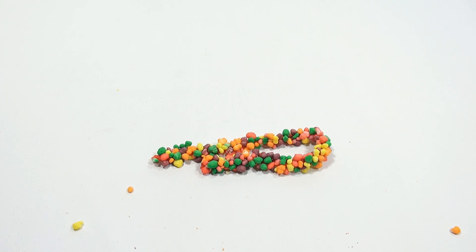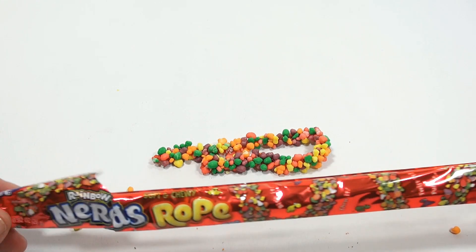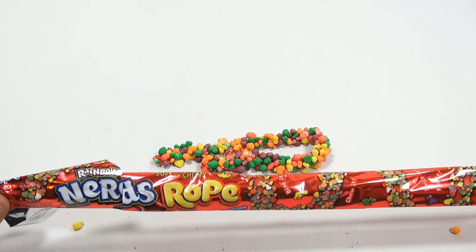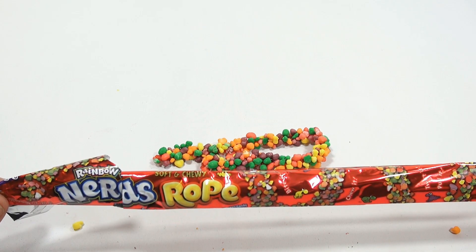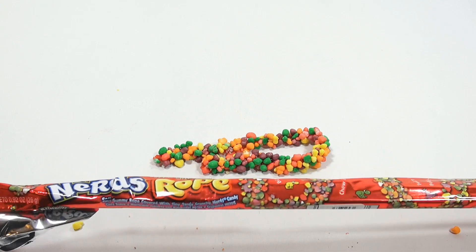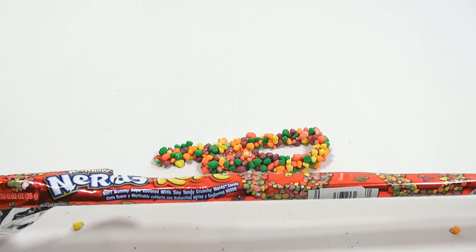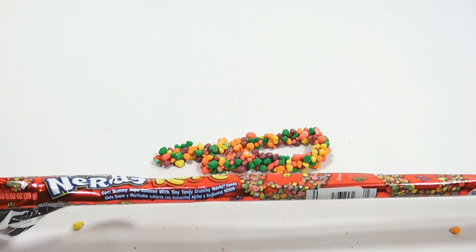So that is the Rainbow Nerds Rope, soft and chewy, and crunchy. Soft gummy rope covered with tiny tangy crunchy Nerd candy.